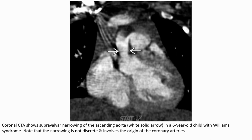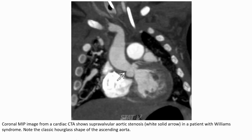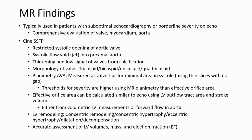Coronal CTA shows supra-valvular narrowing of the ascending aorta in a six-year-old child with Williams syndrome. Note that the narrowing is not discrete and involves the origin of the coronary artery. Coronary MIP image from the gated CT shows supra-valvular aortic stenosis in a patient with Williams syndrome — note the classic hourglass shape of the ascending aorta.